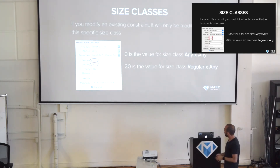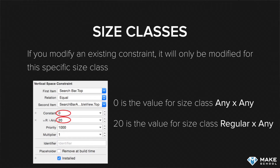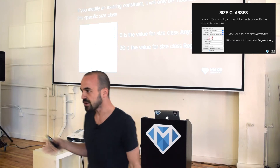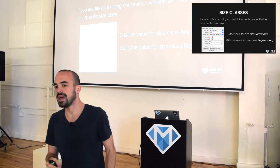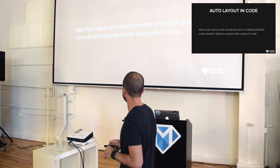You have another way of seeing that when you inspect the details of a view — you can see the different constraints, and you can see which constraints are applied for which specific size classes. If they are only for a specific size class, there will be a prefix. You can see: width regular, height any, the size should be 20. For the default size class, the size of this constraint should be 0. So these are just the different places where you can see that constraints are currently applied to different size classes.